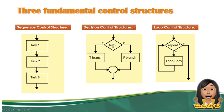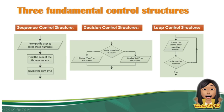Here is a sample of the sequence control structure in code: prompt the user to enter 3 numbers, then compute the sum of the 3 numbers, then divide the sum by 3. This gets the average. Notice the steps go straight down with no conditions — that makes it a sequence control structure. For the decision control structure: 'Is the result less than 10?' If true, display 'Failed.' If not less than 10 (false), display 'Pass.'